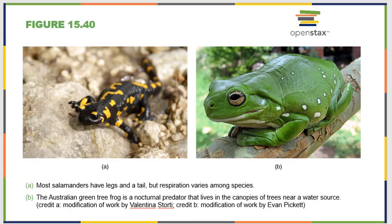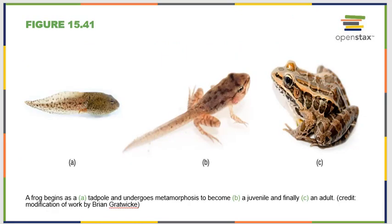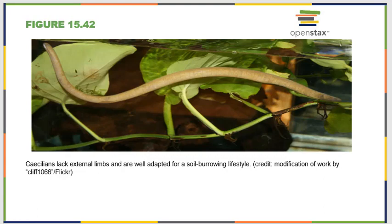Amphibians are also ectothermic — they derive their heat from their environment. Another notable feature of tailless amphibians is the process of metamorphosis: there's a very clear and distinct difference between a young frog, a juvenile frog, and an adult frog. Caecilians are also amphibians — they lack external limbs and live under the soil or in water. They have eyes but are almost entirely blind, which makes sense since there's no light where they live. Students often think they look like a giant earthworm or a snake, but they have all the characteristics of being an amphibian.